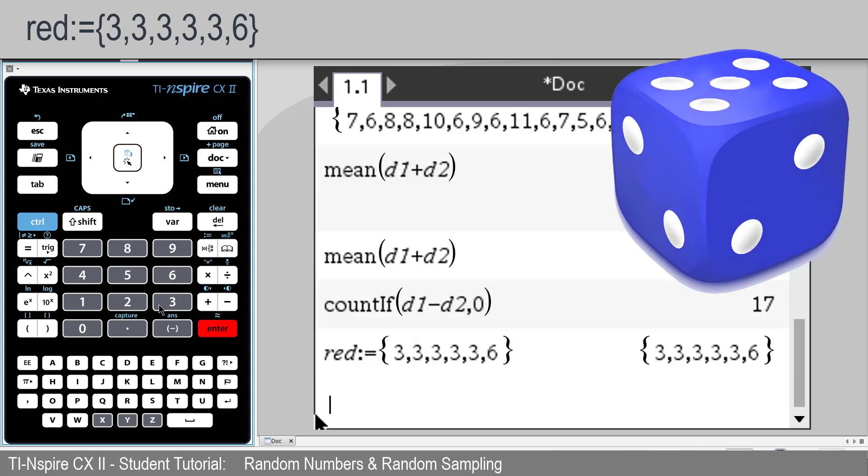He also has a blue dice with the numbers 2, 2, 2, and 5, 5, 5, 5. I'll store that as blue.